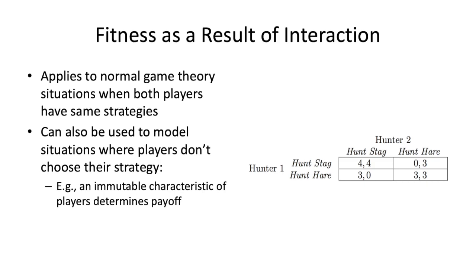This is a lot like normal game theory, but there's a crucial difference. Both players are going to have the same strategy — it's symmetric in two ways. One is both actors or nodes will have the same two strategies. What I'm showing here is the hunt-stag game, so either hunter can choose stag or hare. The second issue is the payoffs need to be the same, so the combinations in the matrix need to be symmetric along the axis.